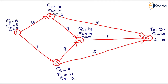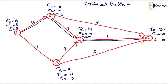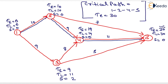Now we will draw the critical path, which is 1→2, 2→4, and 4→5. The critical path passes through nodes 1, 2, 4, and 5, and the completion time of the project equals 30. That is the complete solution of this numerical. Thank you very much, students.